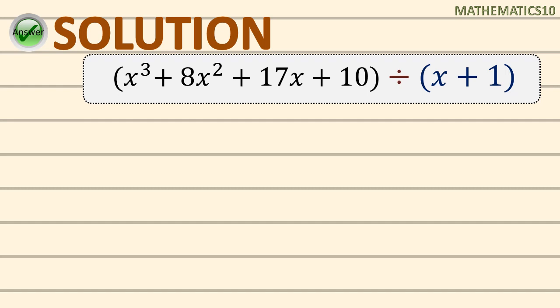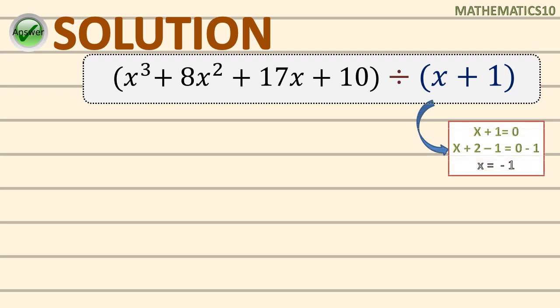First, you really need to check if the dividend is already arranged in decreasing order. As you can see, it is already arranged in decreasing order. And to identify what value of x we are supposed to use in the synthetic division, let's consider our divisor. The value of x that we are going to use is negative 1.